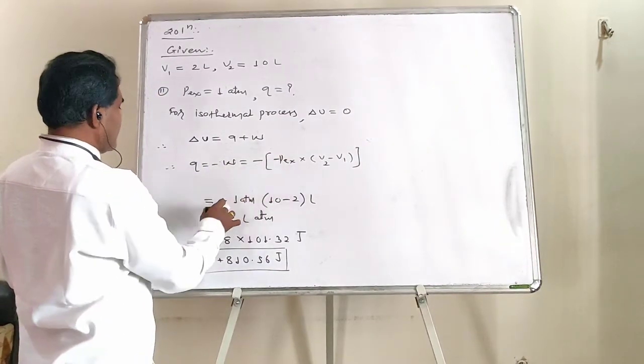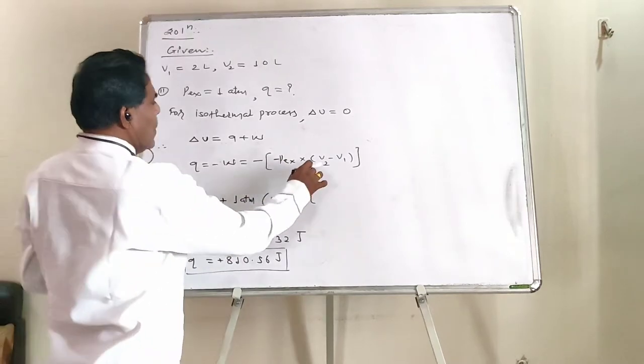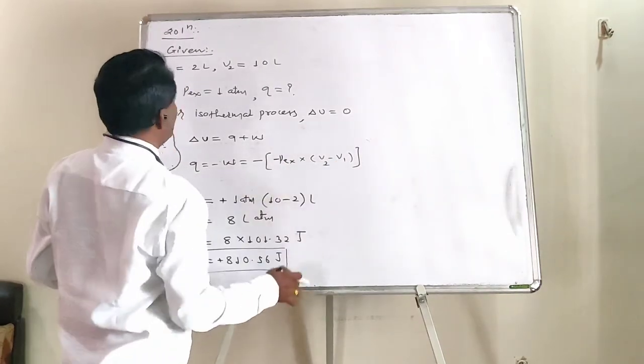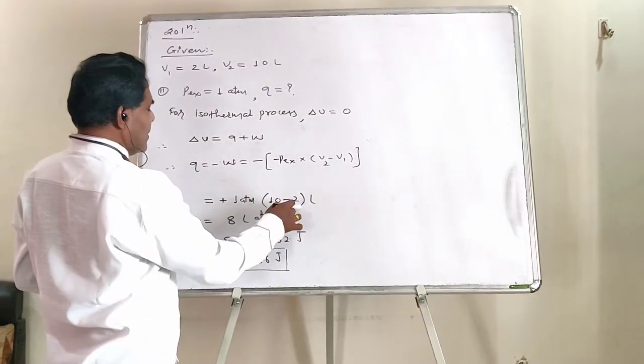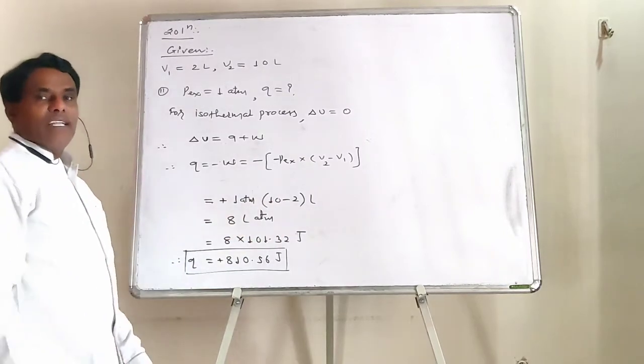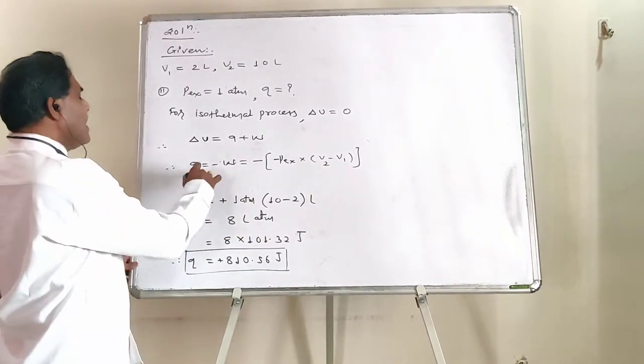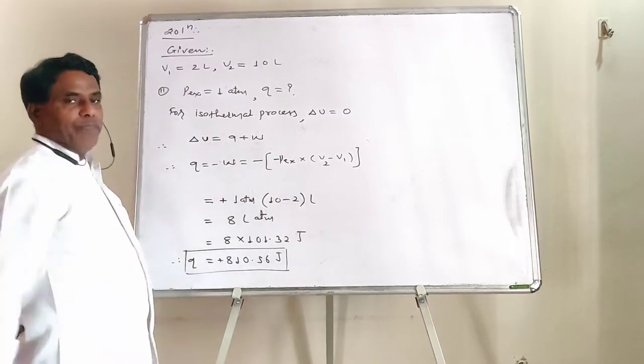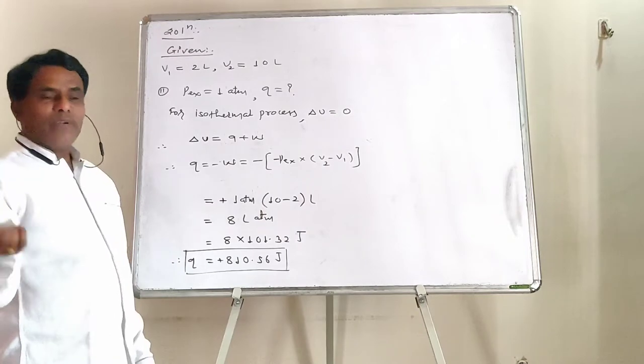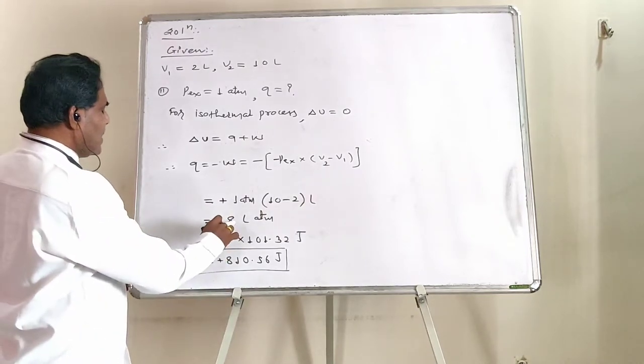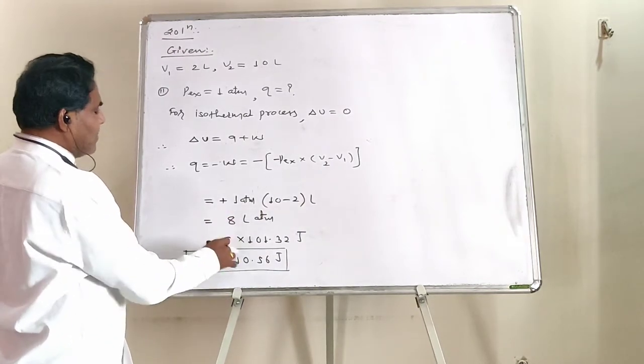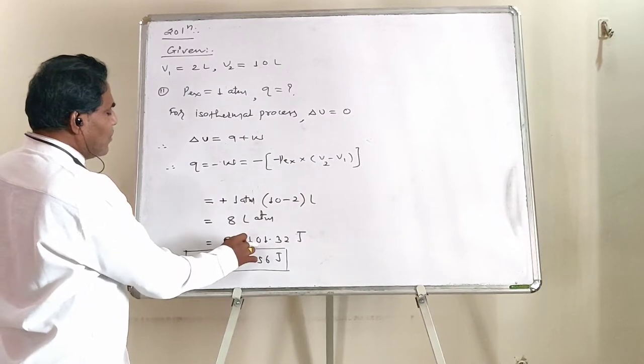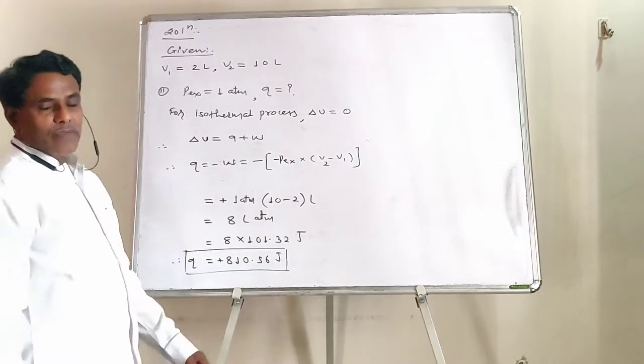Agar ang yahan values rakhenge, minus minus becomes plus, external pressure is one atmosphere. Volume change, V2 minus V1, it is A minus 2, that is 8, and that's why. Heat change, heat change, ya work done, it is equal to 8 liter atmosphere. Lekin jyadha tar, heat is expressed or converted in Joule, so we shall convert liter atmosphere into Joule, by multiplying it by 101.32 Joules.